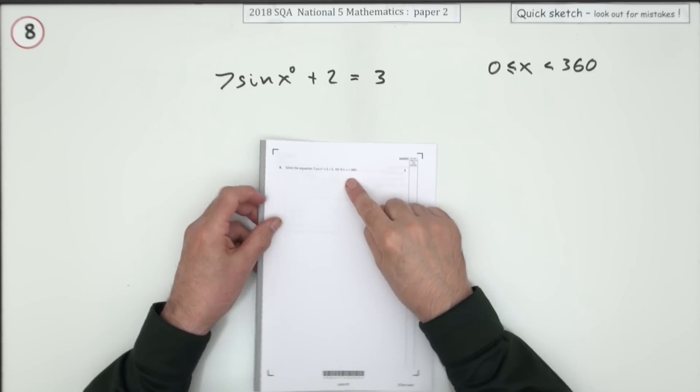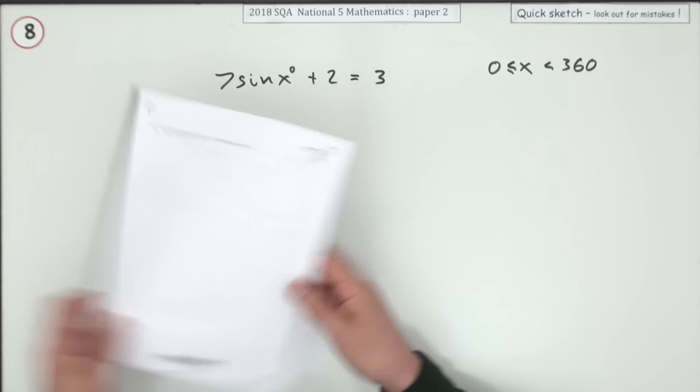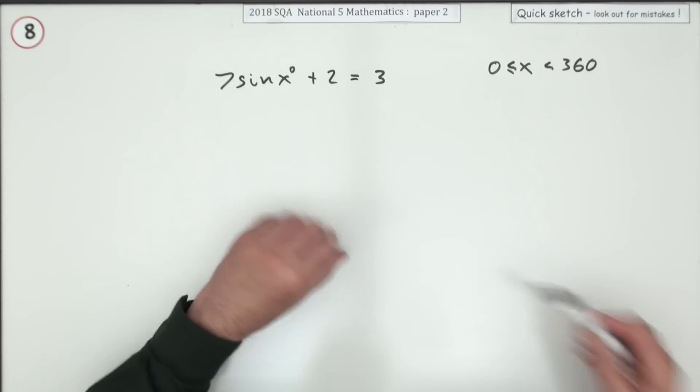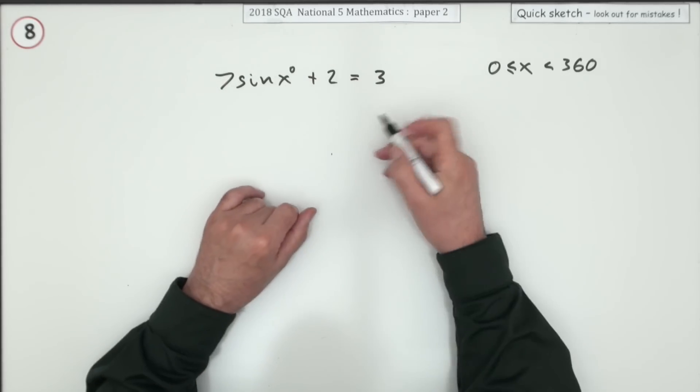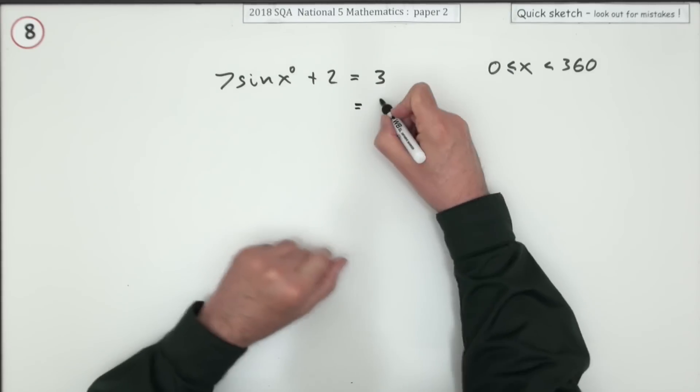Number eight then. Solve this trig equation where x is between zero and 360 but not including the 360. Well it's just an equation. I want x so you just get rid of the bits and pieces. Get rid of the two first. Take the two across and subtract and that's one.